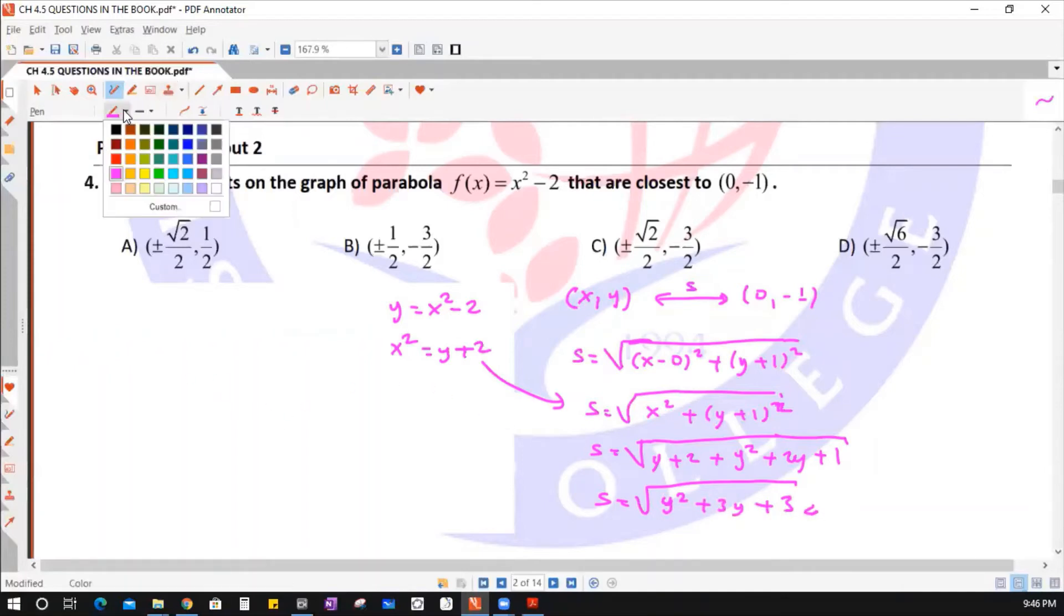In the next step, you must find the minimum value of this function because it says closest distance. You must find the minimum value by differentiation.